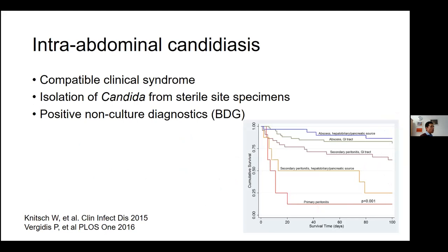Intra-abdominal candidiasis is a whole other syndrome. You need compatible clinical syndromes — some are shown on a Kaplan-Meier survival curve. To make a diagnosis, you need isolation of Candida from a sterile site specimen such as abdominal fluid or tissue, and usually positive non-culture diagnostics.